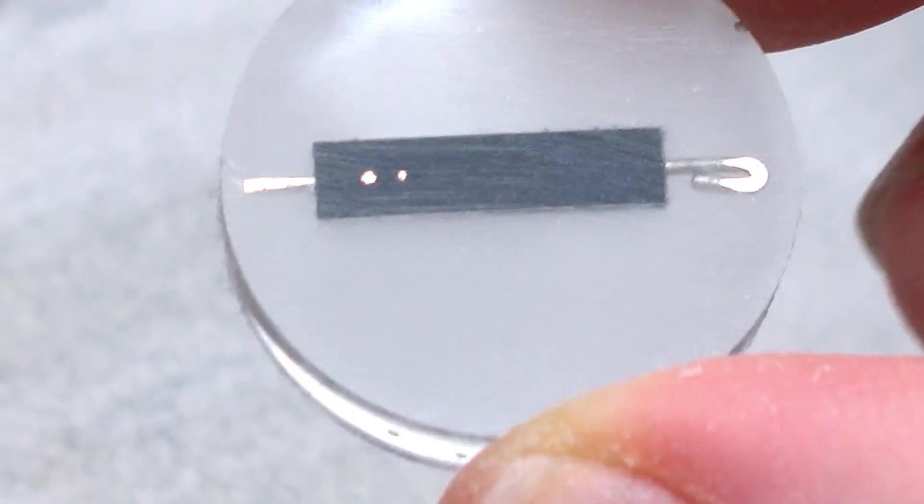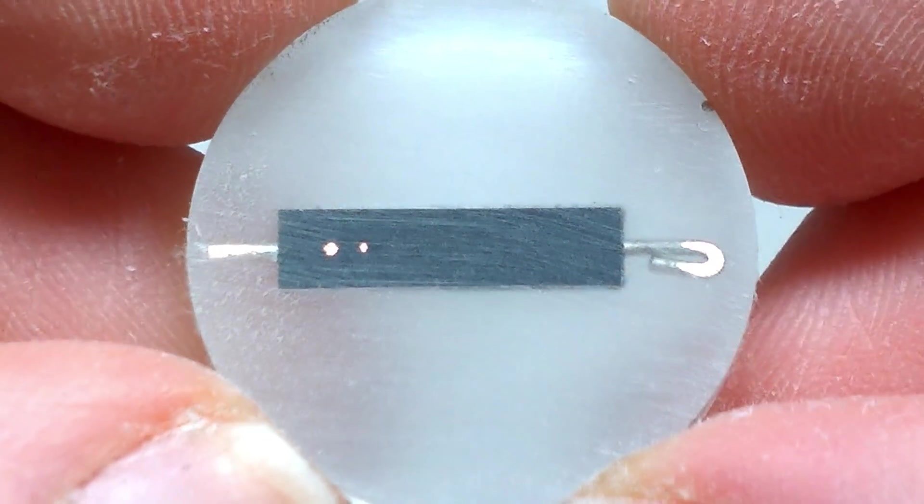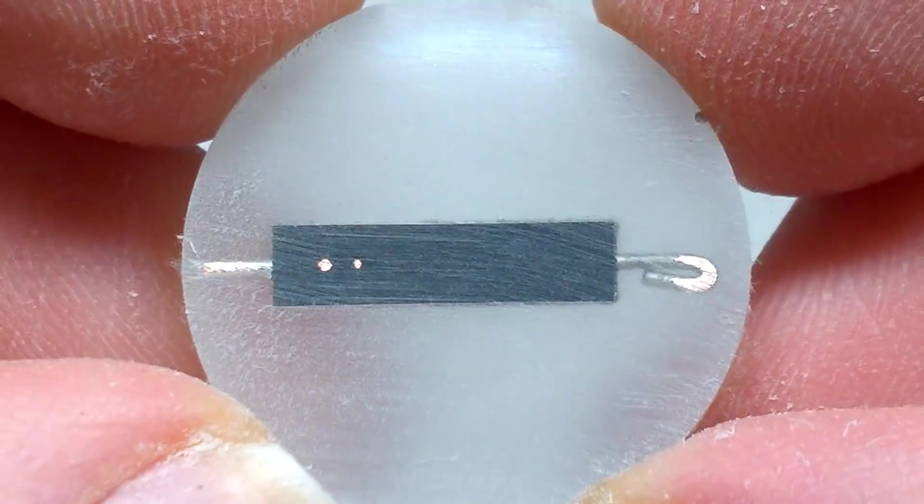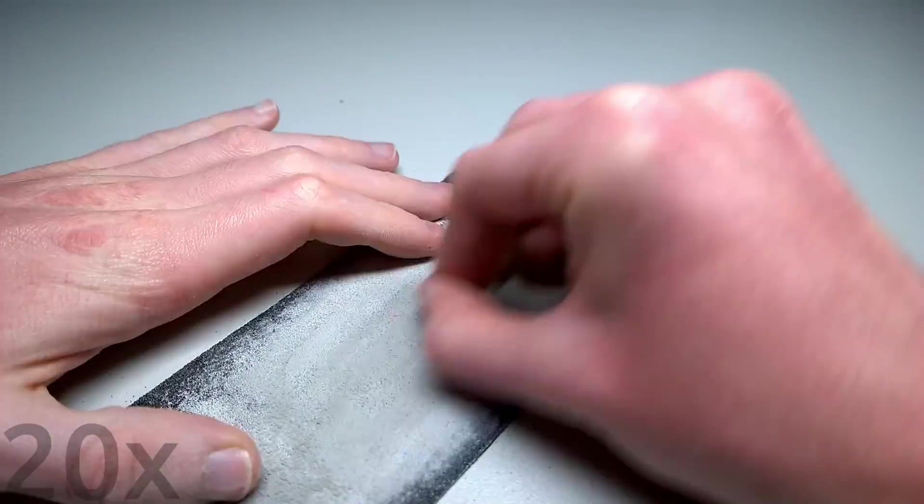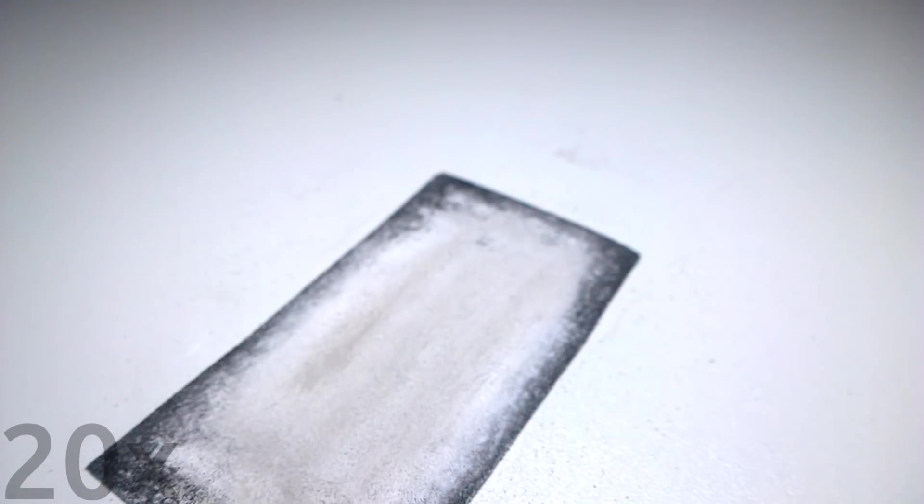A little bit of the way through we can start to see some, by the looks of it, bits of copper on one side of the diode. And here we go. Now that I've sanded the other side down a bit more we can see that it is actually symmetrical.